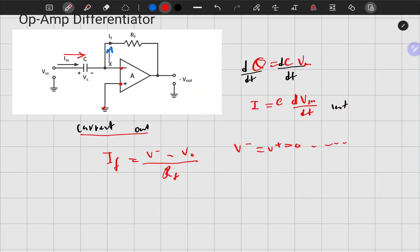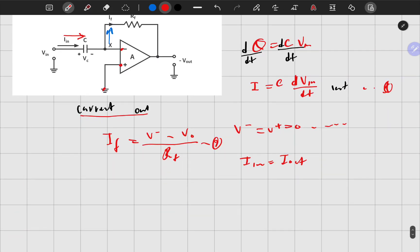Now what we can do is equate the currents. We'll have C dV_in/dt equals V minus, which is zero, minus V out all over RF.